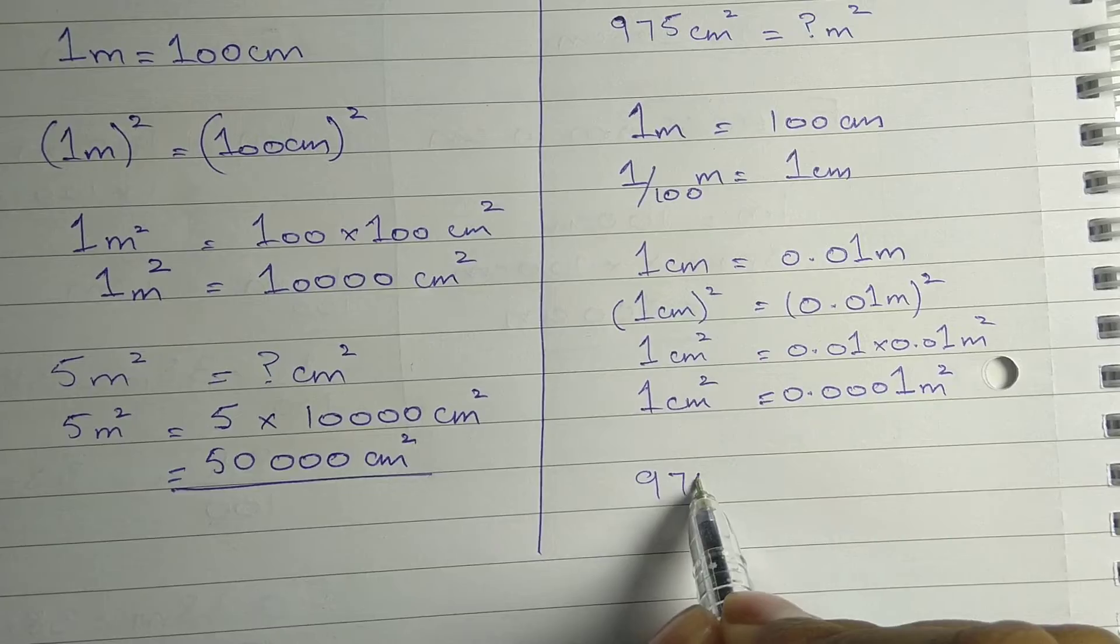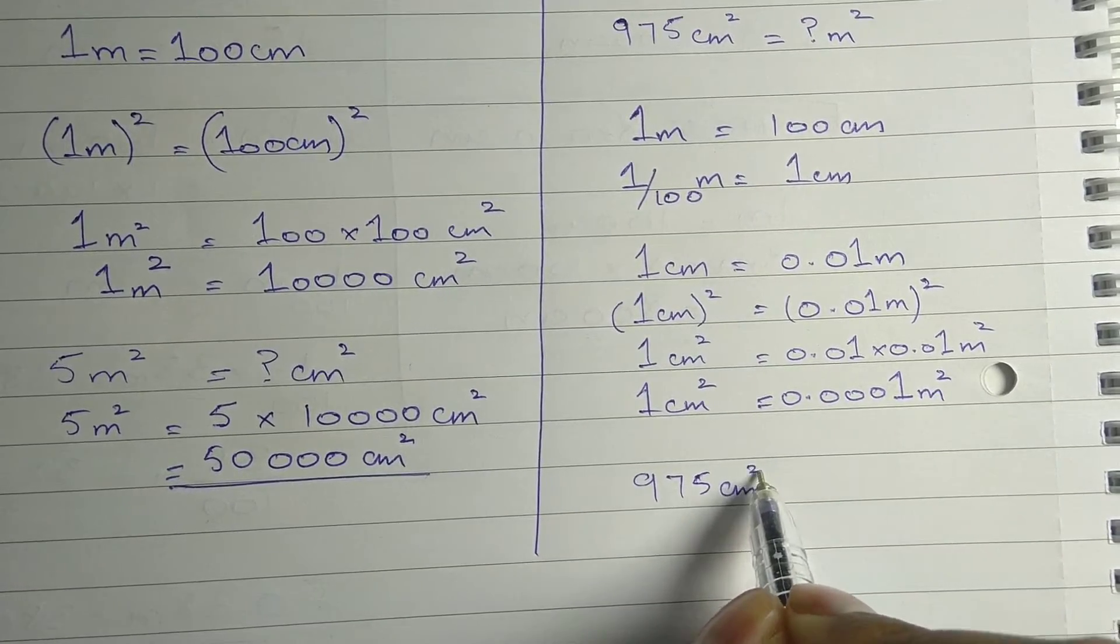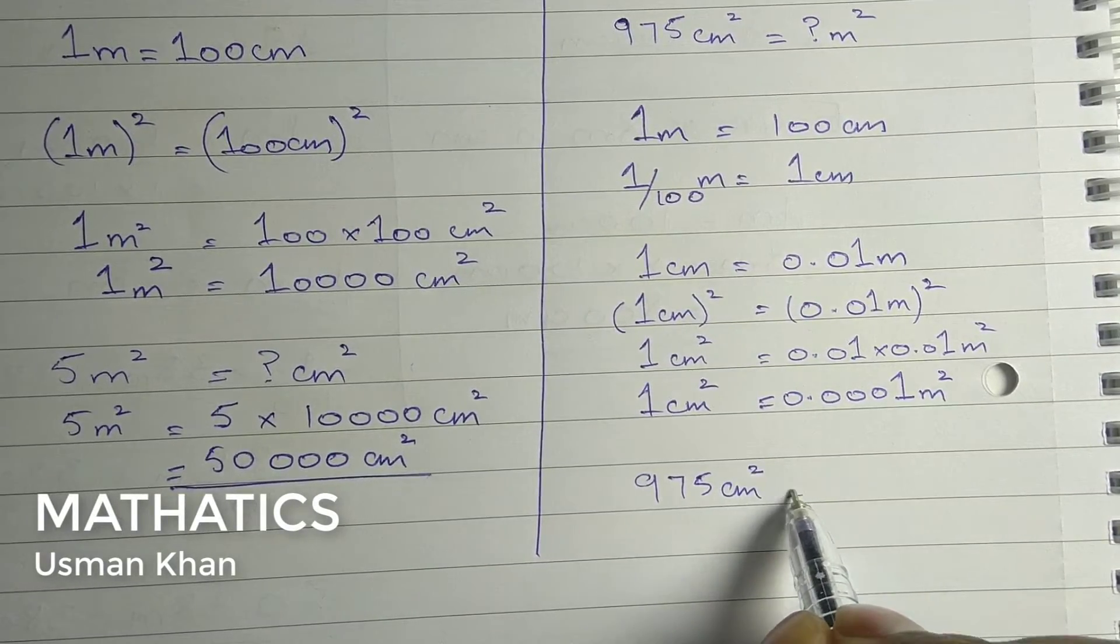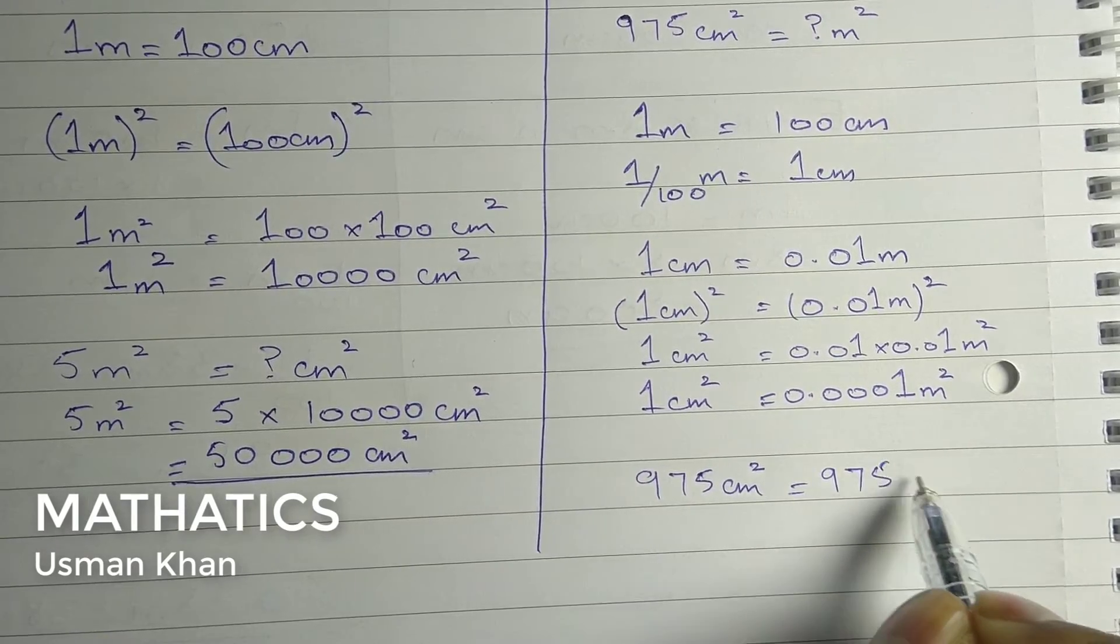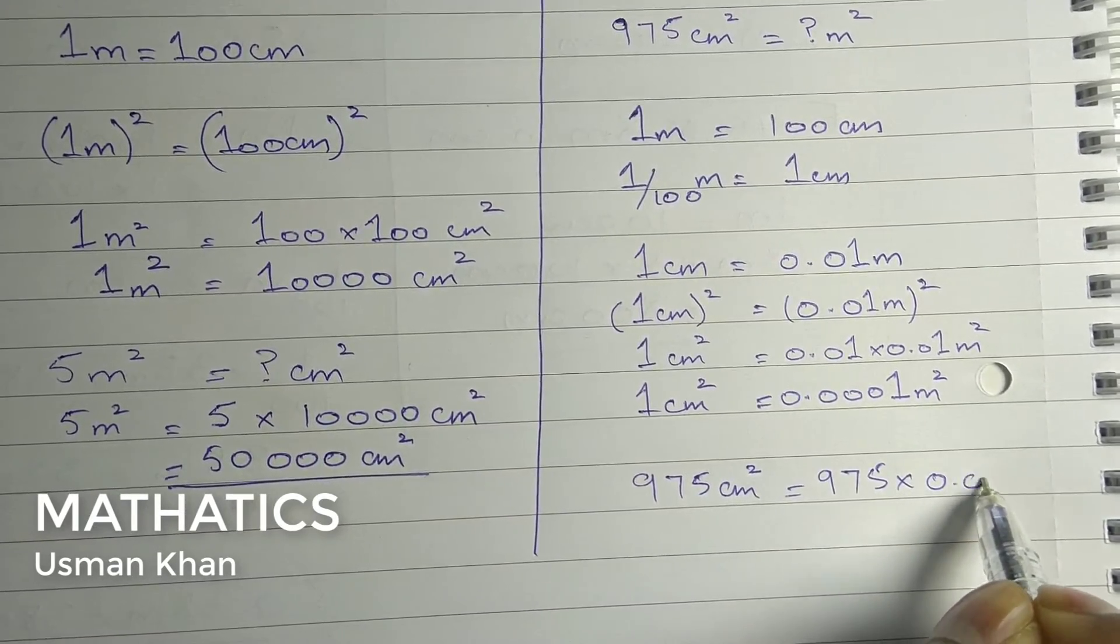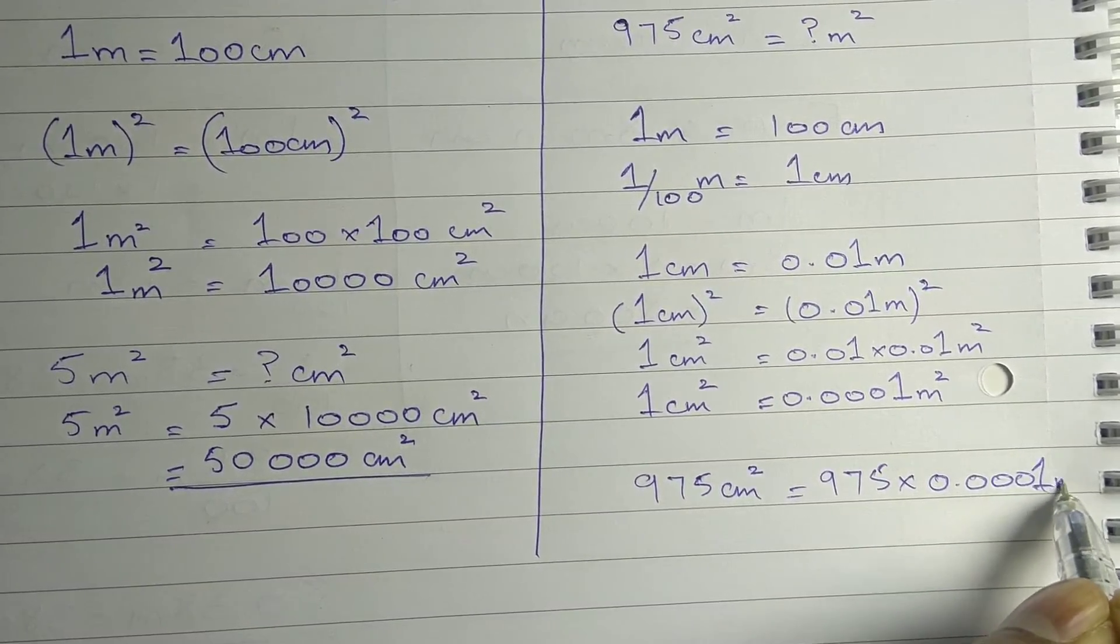So 975 centimeter square will be 975 multiplied by 0.0001 meter square.